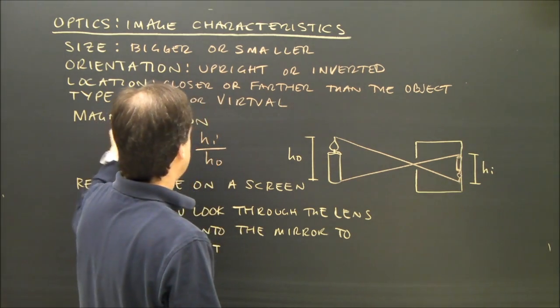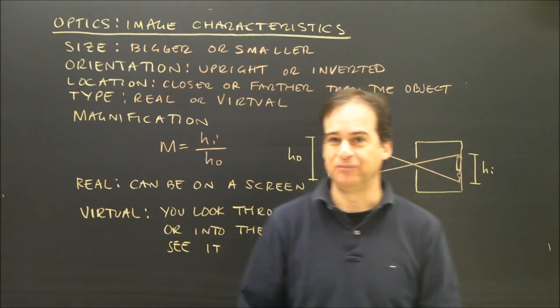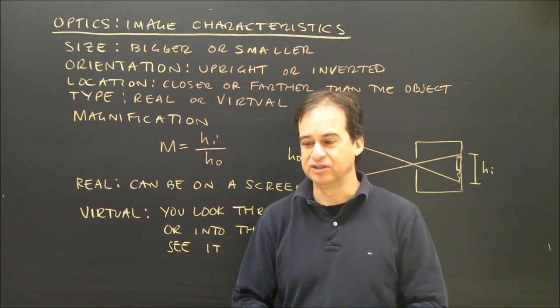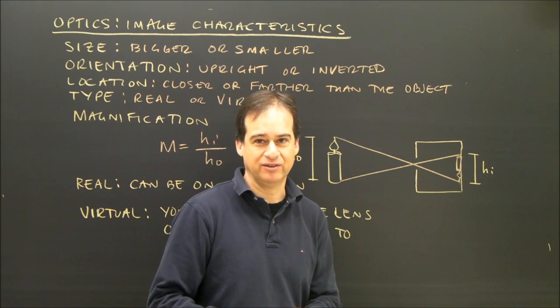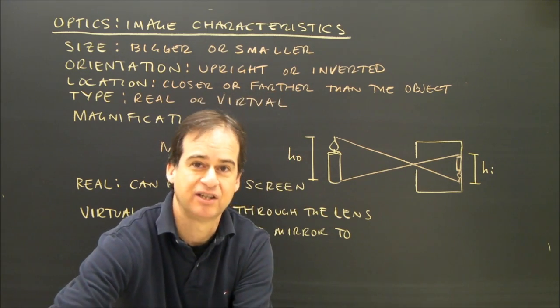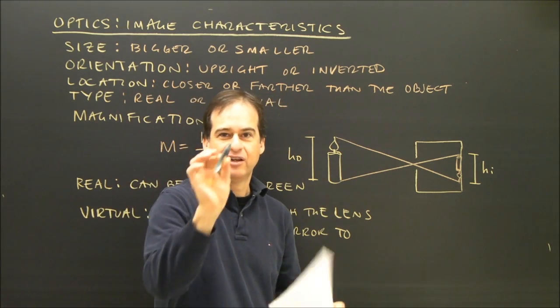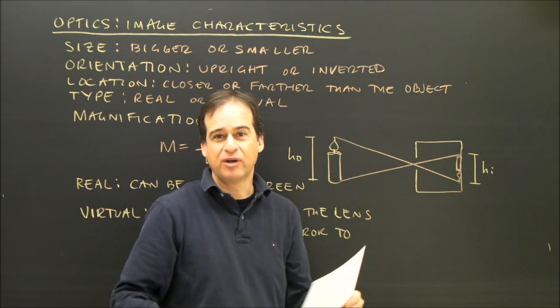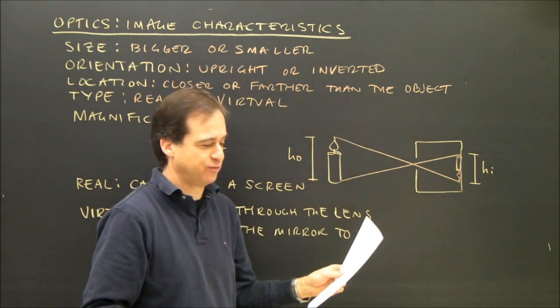And we've got type, real or virtual. This takes a little more discussion. Real images are images that can be projected onto a screen. So for example, I have a lens here, this is a lens in this shape, it's called a convex lens. And I can create a real image, which is going to be difficult for you to see.